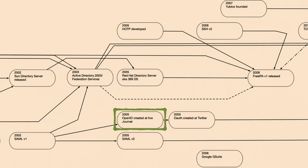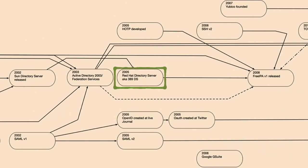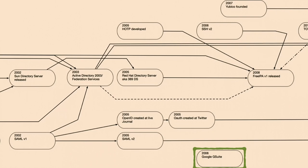In 2005, we start to see more competition in the web single sign-on space. OpenID was created by LiveJournal — I would never have picked LiveJournal as the one who created OpenID, but apparently they are very influential in the web single sign-on space. In 2005, Red Hat open-sourced their acquired Netscape code, which became 389 Directory Server and Red Hat Directory Server. In 2006, Google launched G Suite — one of the early times where we start to see a cloud provider requiring identity synchronization to access a service in the cloud. You need to capture password hashes in a certain way and synchronize them to Google.